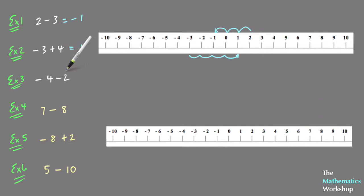Example 3: minus 4 minus 2. So once again, starting on minus 4 and moving 2 in the negative direction, which is to the left. So starting on minus 4 and moving 2 to the left, 1, 2, and that actually is on the minus 6. So minus 4 minus 2 is equal to minus 6.